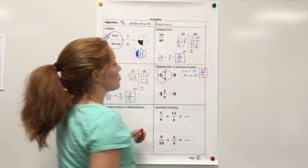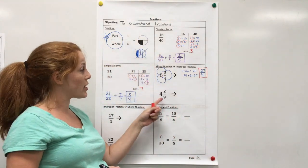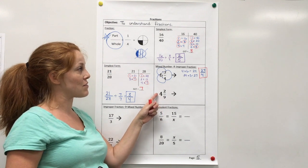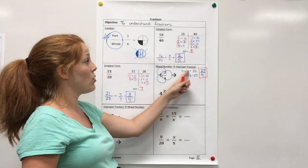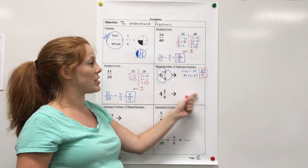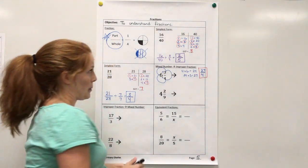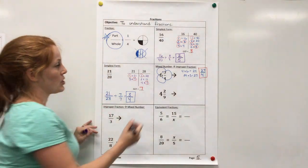27 fourths would be 6 and 3 fourths as an improper fraction. Go ahead and try 4 and 2 ninths and see if you can either use this method or the Texas popcorn method and figure out what it is as improper.